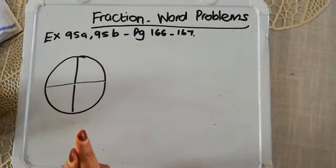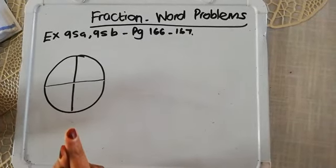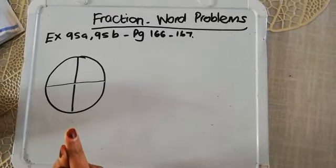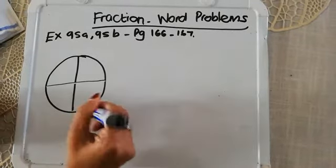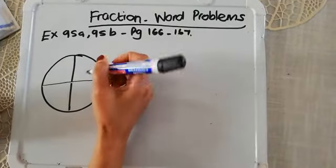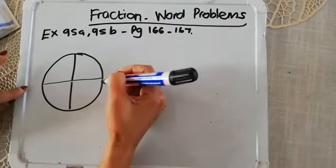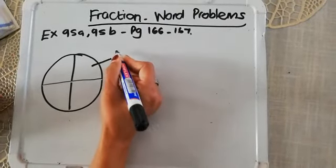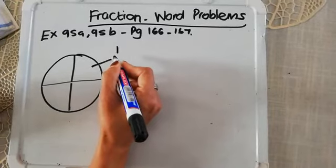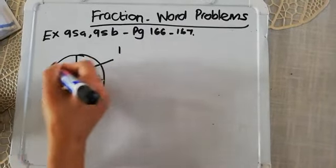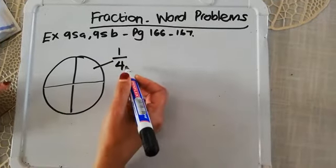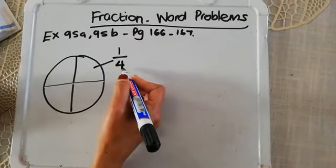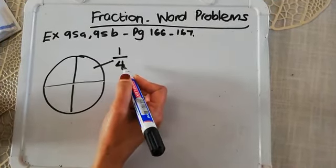And then it says what fraction of the pie would each get if they shared equally. So in your textbook as well, you can see there's a diagram of the pie. And by now, you should already know if this is a pie and you divide it into four, then this here is one part that you're getting. And the whole pie is divided into four parts, and that's where I get my denominator. So each person will get one over four or one-fourth or a quarter.